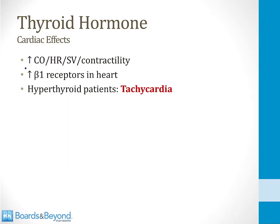In the heart, thyroid hormone can raise heart rate, cardiac output, stroke volume, and contractility. One well-described mechanism is increasing the number of beta-1 receptors in the heart so that catecholamines exert a greater effect. Clinically, hyperthyroid patients are often tachycardic via this mechanism.